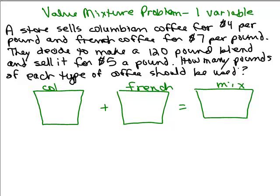So I need to know how many pounds of each to use and I'm not told how much Colombian or how much French but I do know there are 120 pounds in the mixture. Now for those of you who know how to solve systems of equations with two variables and two unknowns, you can do this using two variables.